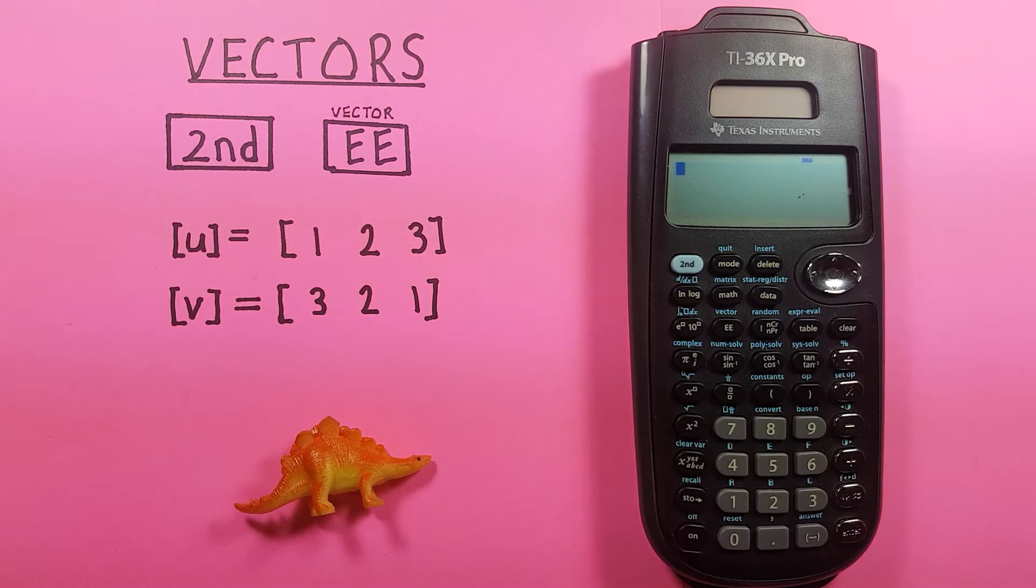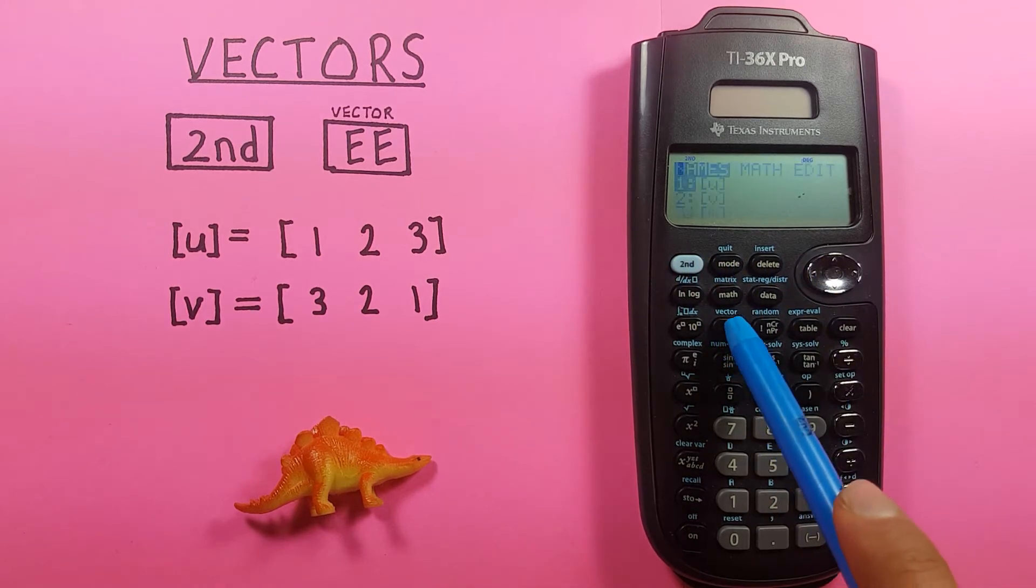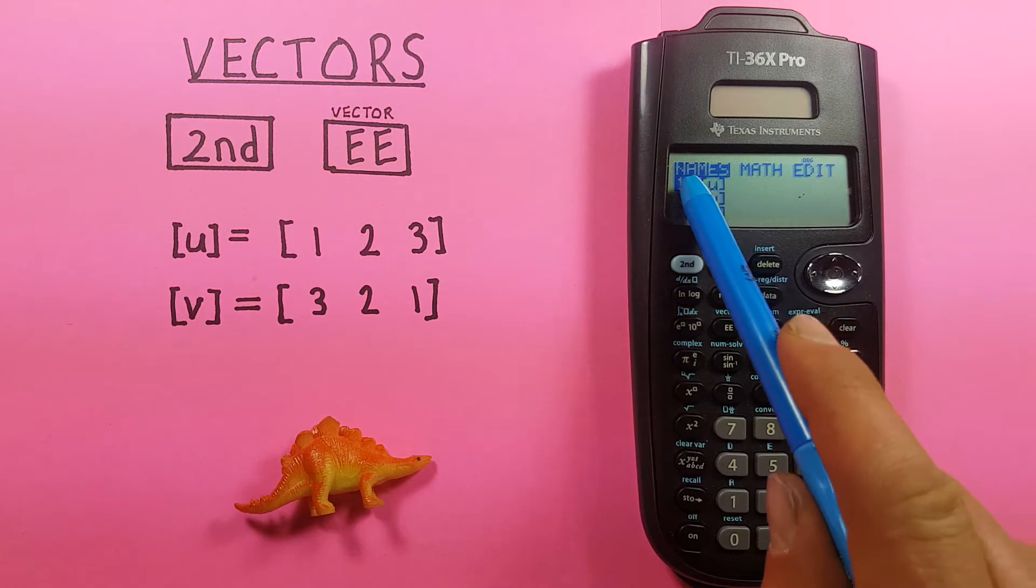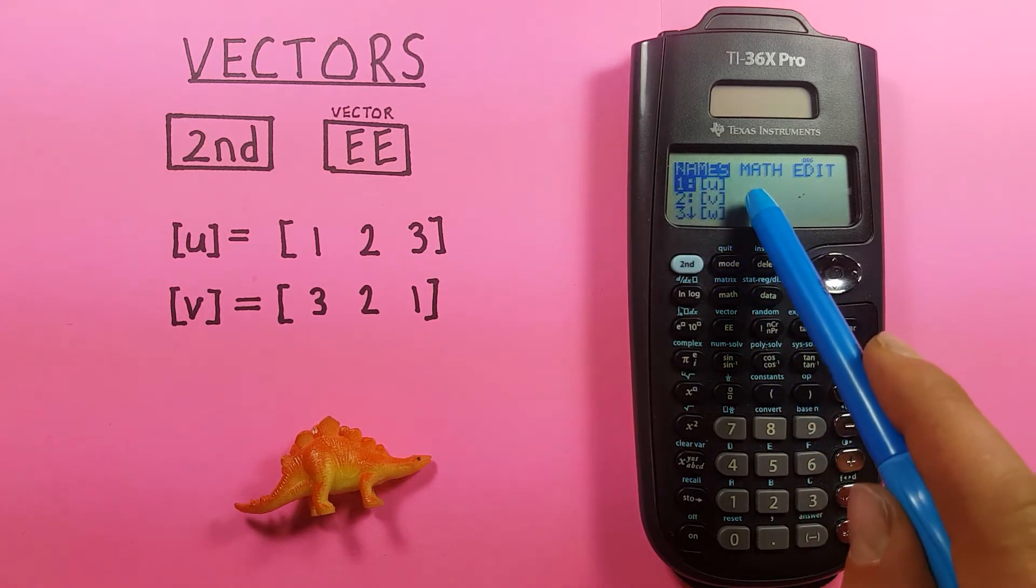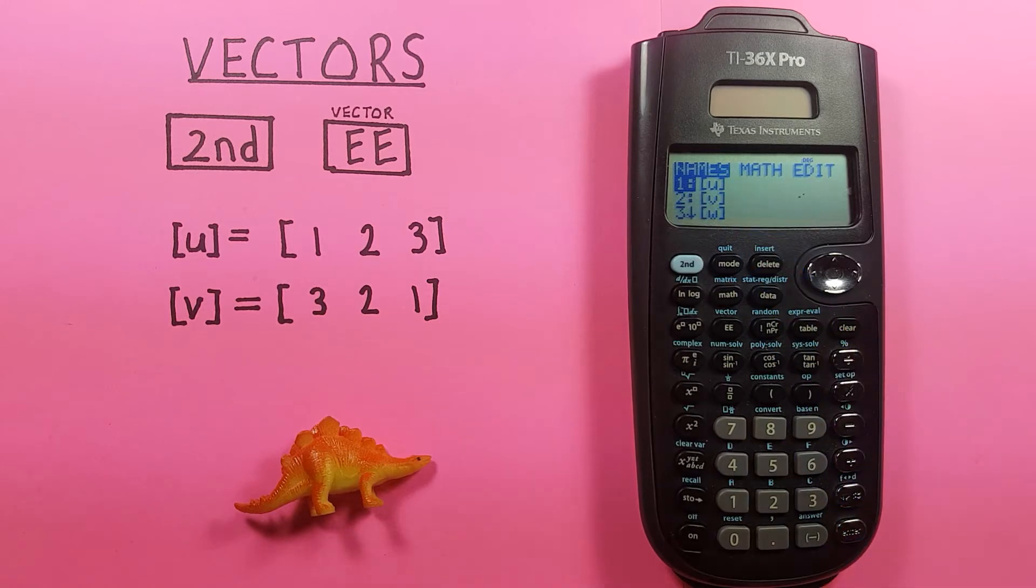Getting started, if we want to enter our vectors onto our calculator, we press second and then the EE key. That'll bring us to this menu here. You can see we're highlighting names right now and we have U, V, and W. These are the three options for vectors we can enter, so we have three possible vectors we can store.